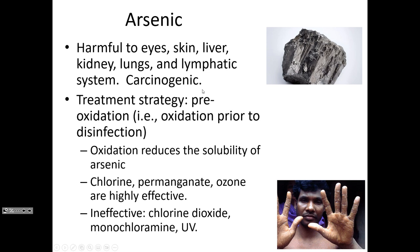Arsenic, when it's reduced, is soluble; when it's oxidized, it's less soluble. Arsenic can be found in four different charges, and the least soluble is arsenic 5+. Oxidizing arsenic with chlorine, permanganate, or ozone will allow it to precipitate out and be removed in the settling and filtration stages.